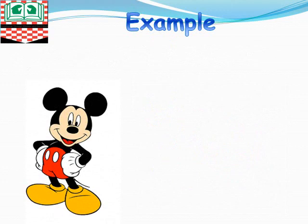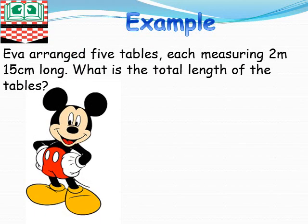Let's take an example. Eva arranged five tables, each measuring 2 m 15 cm long. What is the total length of the tables? Now, what are we supposed to do? Since we have five tables, we're looking for the total length of the five tables.